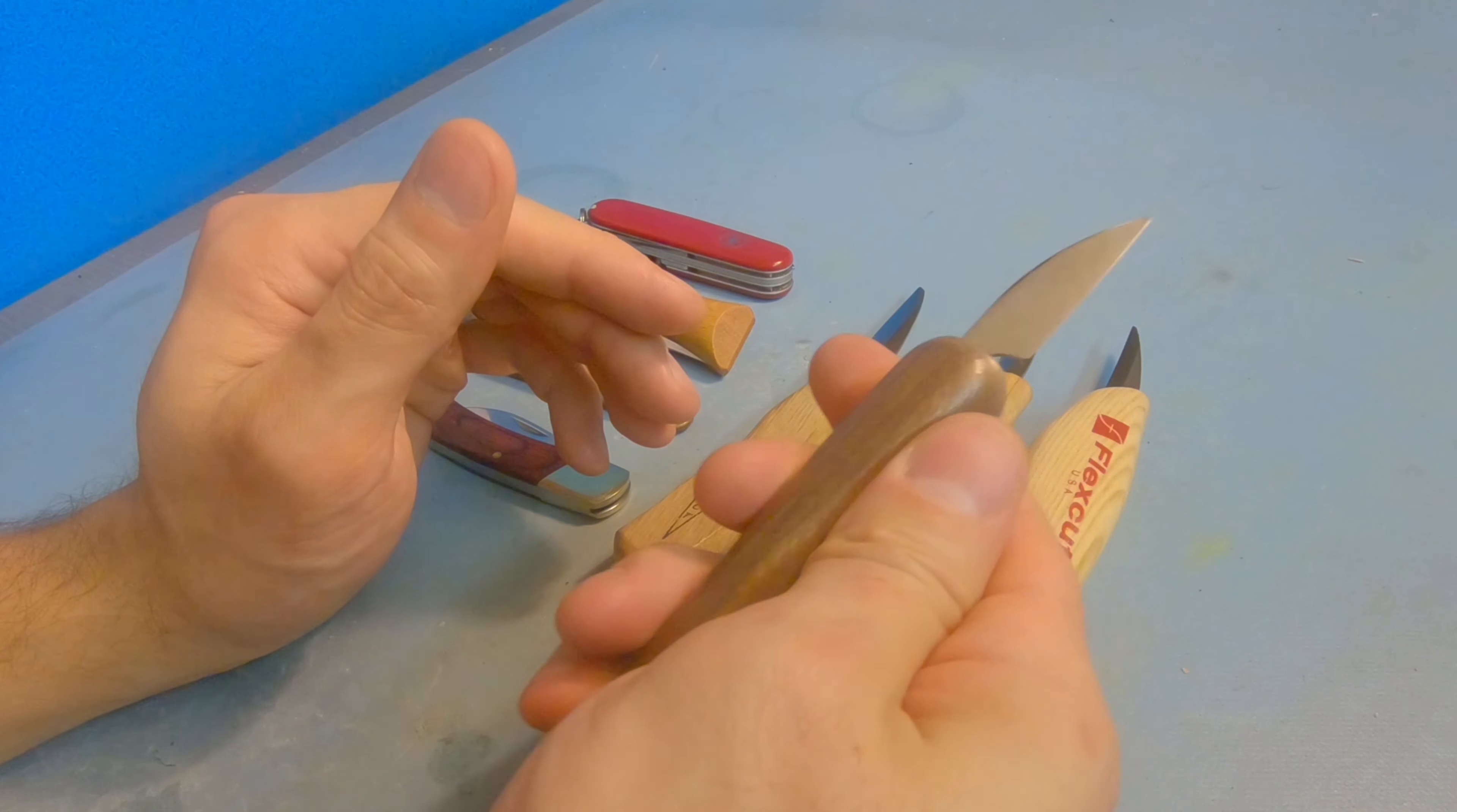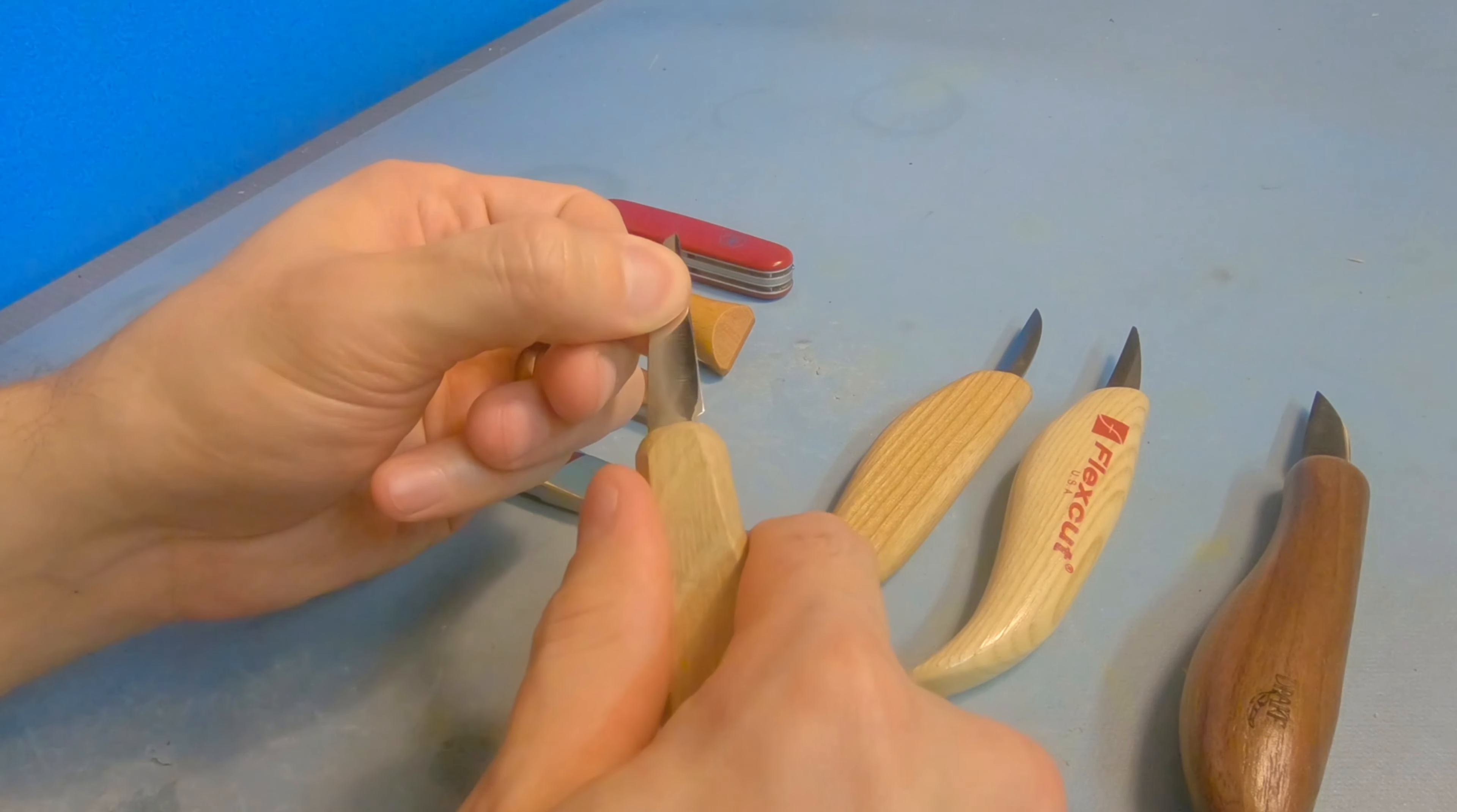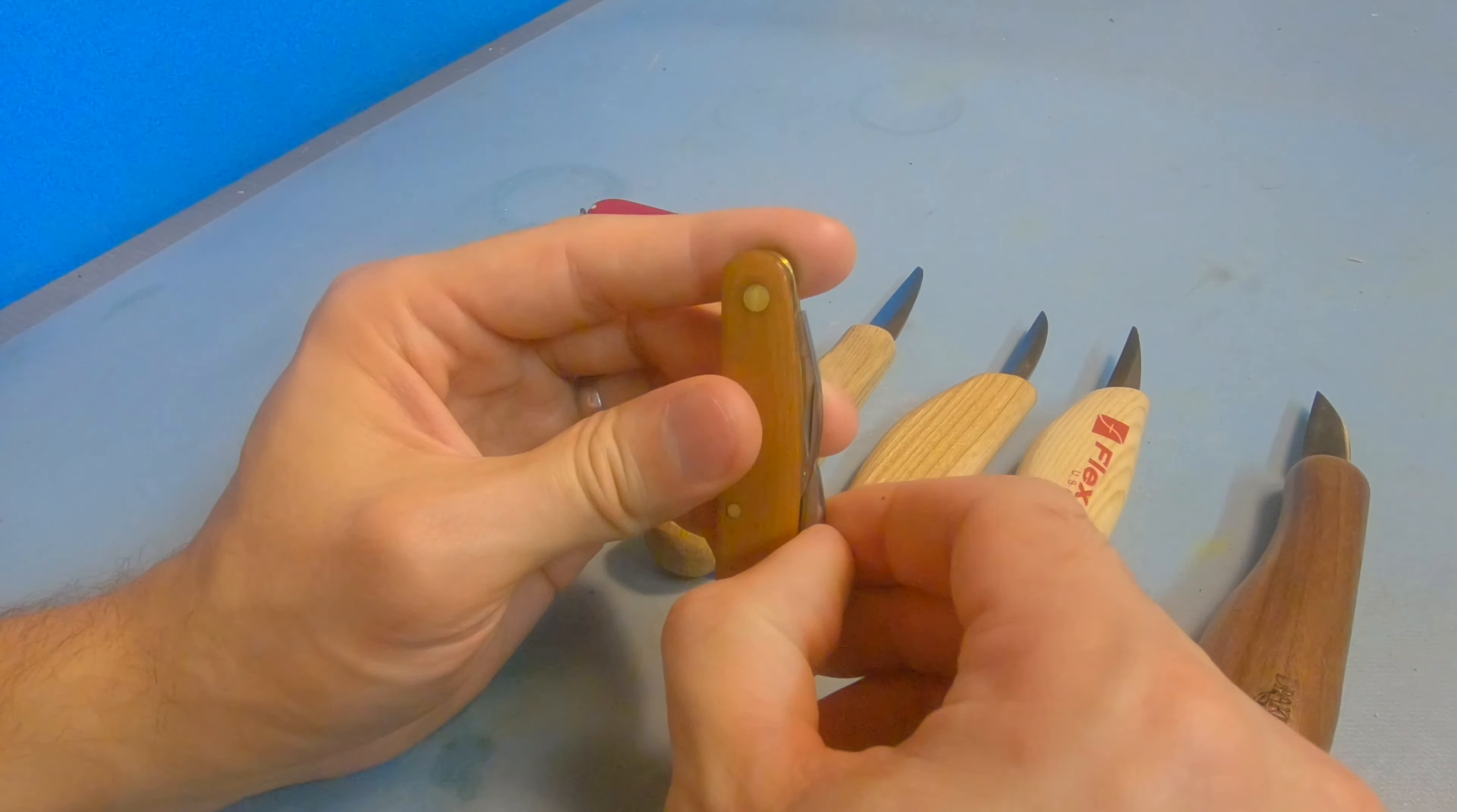But fixed bladed knives usually will have more of a simple design to it. This puts more focus into the quality of the blade and overall handle design and whatnot. So more of the money is going to the quality of the material instead of any moving parts. It's nice because the blade is very solid, there's no movement whatsoever, and it just makes for an overall good cutting tool. But you do only usually just get one blade out of the deal.